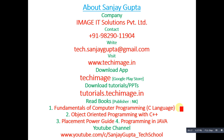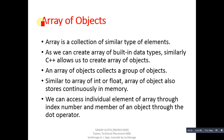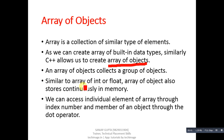Array of objects — as you all know, an array is a collection of similar type of elements. Just as we can create arrays of built-in data types like int or float, similarly C++ allows us to create array of objects. An array of objects stores a group of objects continuously in memory, similar to array of int or float.